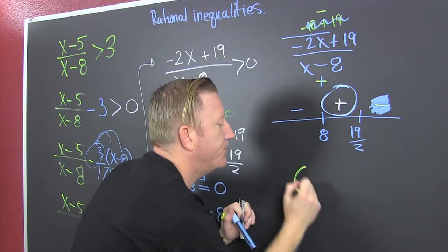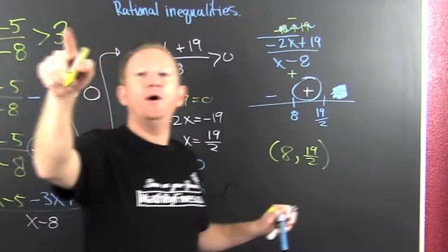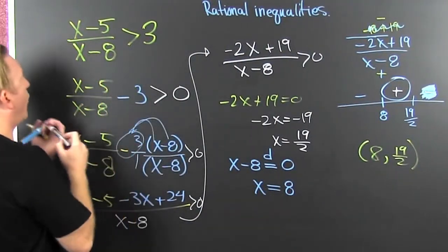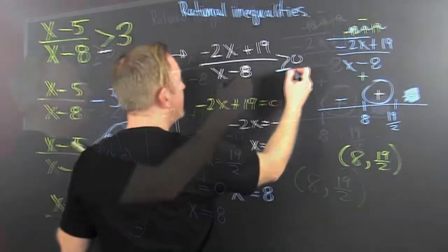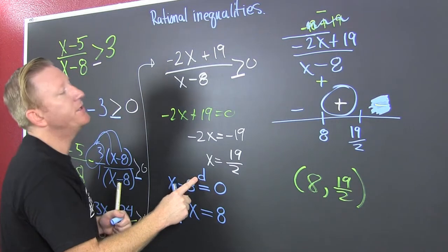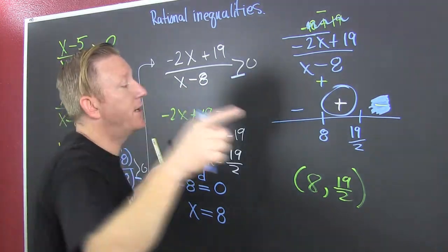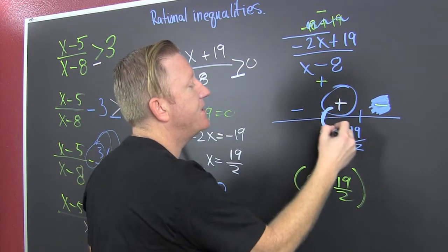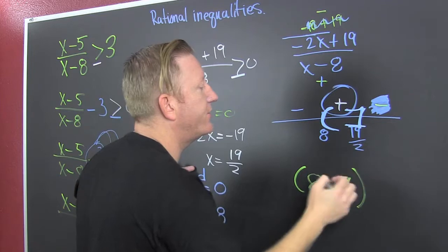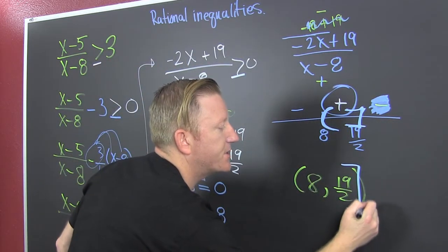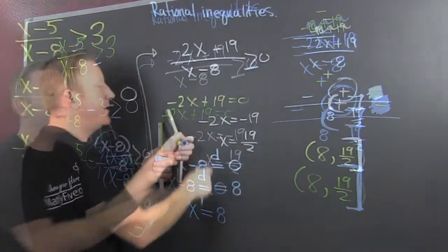Our interval is 8 to 19 halves. Now, what if this was a greater-than-or-equal-to? Then the endpoints would have brackets. But it has to do with this 'd' — you can never divide by zero. So the value that comes from the denominator can never be included, even with or-equal-to. That's the difference between a critical value in the denominator versus in the numerator.